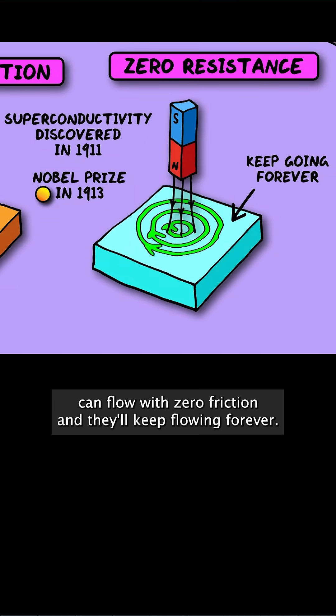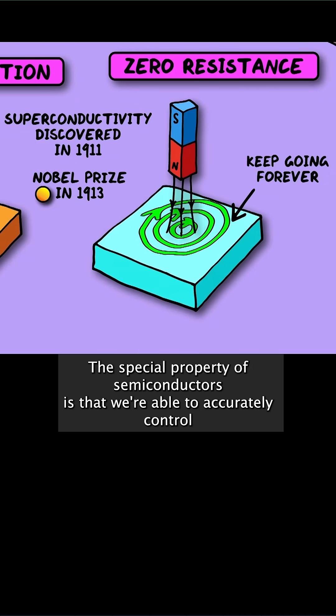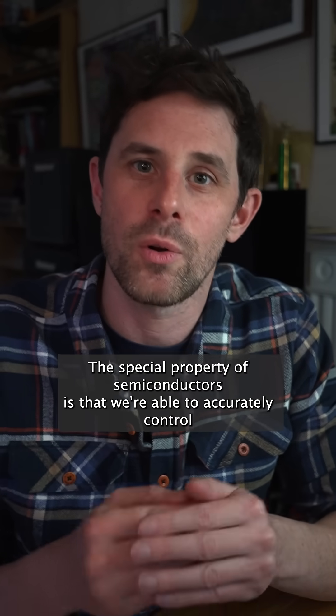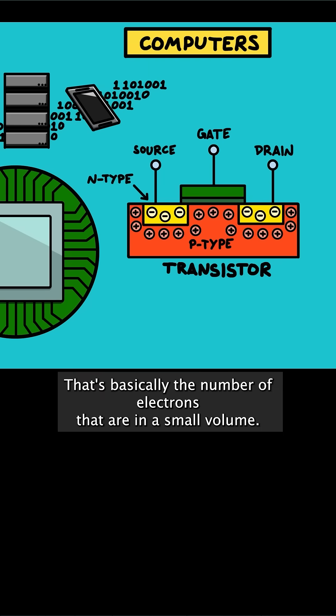Basically the electrical current can flow with zero friction and they'll keep flowing forever. The special property of semiconductors is that we're able to accurately control the electron density. That's basically the number of electrons that are in a small volume.